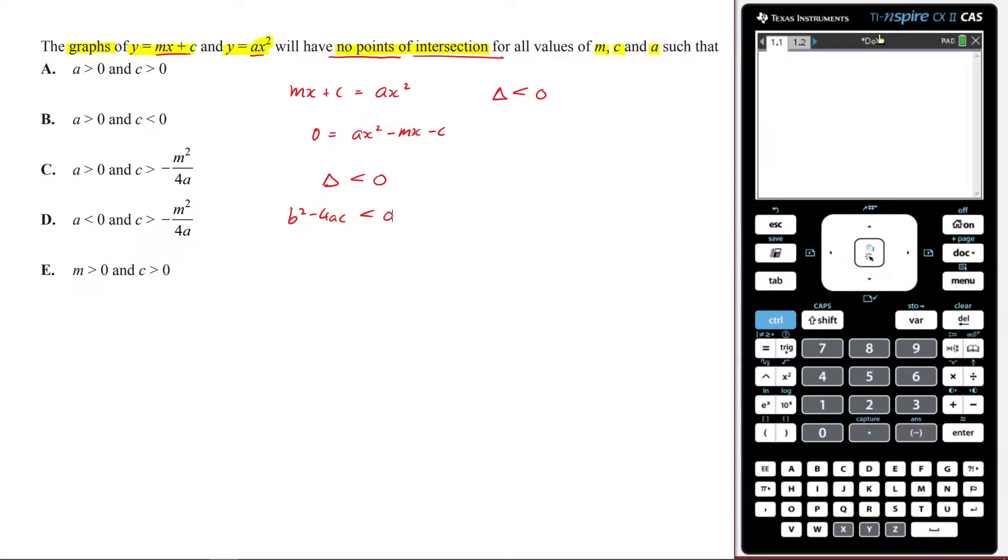Now we have to figure out what a, b, and c are. That one, that one, and that one. That's going to be my a value, my b value, and my c value.